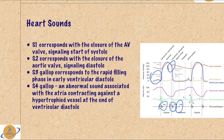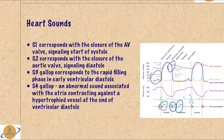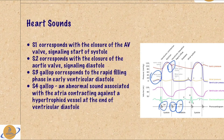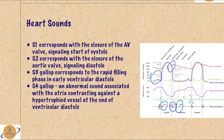The S3 gallop corresponds to the rapid filling phase in early ventricular diastole. This can be physiologic — normal in kids or in pregnancy. The S4 gallop is not on the diagram because it's an abnormal sound; it is associated with the atria contracting against a hypertrophied ventricle at the end of ventricular diastole. For example, if someone has high blood pressure, the left ventricle hypertrophies, and when the atria pump that last 10 milliliters of blood into the ventricles and it hits the wall of that hypertrophied ventricle, you hear an S4 gallop.